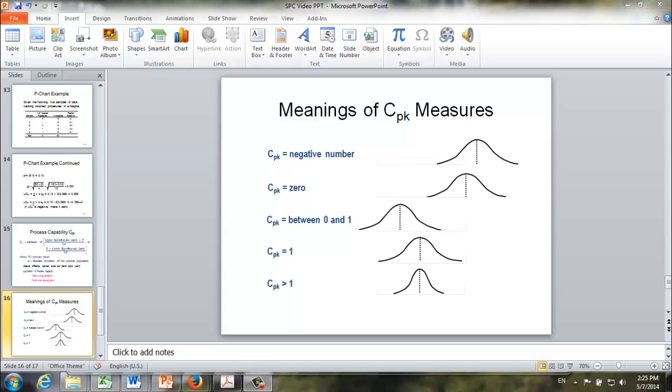Generally speaking, the value of CpK, the larger the better. The threshold value would be 1. Generally speaking, if CpK is 1 or better, we say our process meets the specification. If it's less than 1, we are saying the process does not meet the specification.